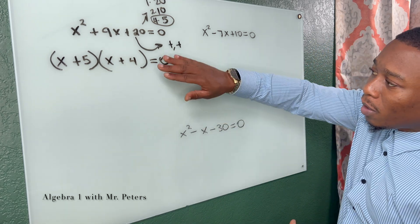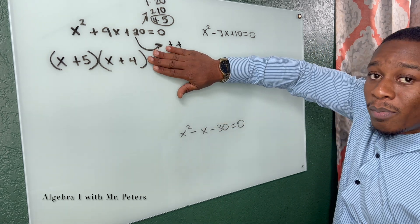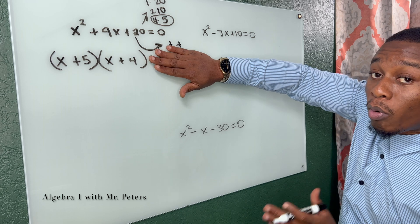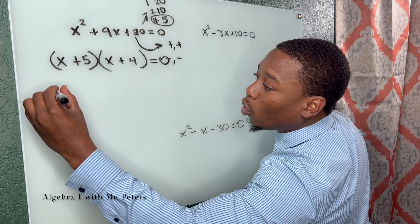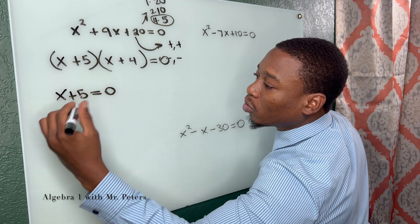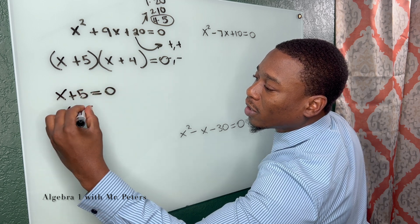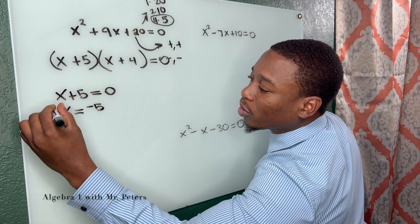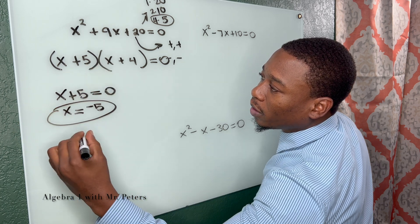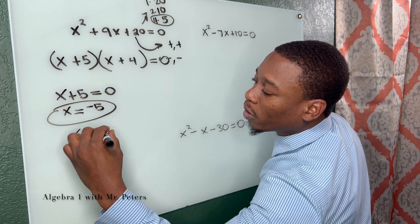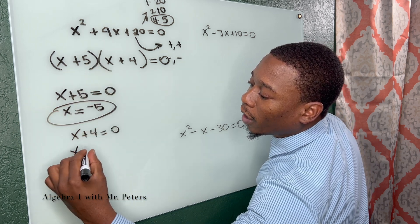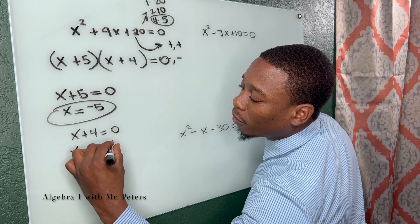Now students make a mistake because they just leave it like this. But when we're using zero product property, we have to go one more step and do x plus five is equal to zero, and we'll get x is equal to negative five as an answer. And then we need to do the same thing where x plus four is equal to zero, and we need to get x is equal to negative four.